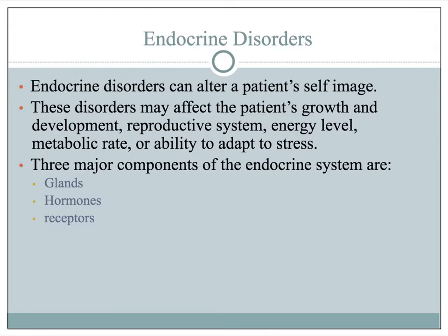All of these have to be functioning appropriately for the endocrine system to work properly and affect growth and development of the patient, the metabolic rate, their ability to adapt to stress, etc. The disorders can be within the gland itself, within the release of the appropriate amounts of hormones, or with the receptor sites for these hormones. It can vary as to the cause of the problem.